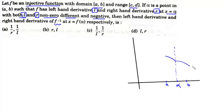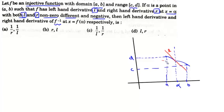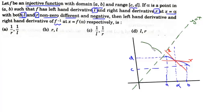We need to find the left hand derivative and right hand derivative of f inverse at x equals f(alpha). This function is defined in the domain a to b and its range is from c to d. At alpha, if we draw the left hand derivative, its slope is l, and in the right neighborhood of alpha, the slope is r. Now we know that for the inverse function, we just have to take the reflection of this function about the y equals x line. So if we draw this y equals x line and take the reflection, the function will be drawn accordingly.